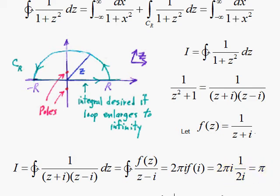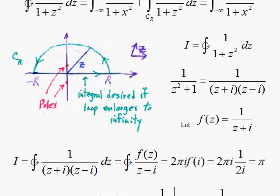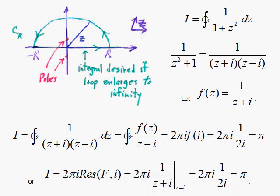But watch this. You can also use the residue theorem, and that is even faster, because this here says, with the one pole, I want 2πi times a residue when you take the pole to be z equal to i.